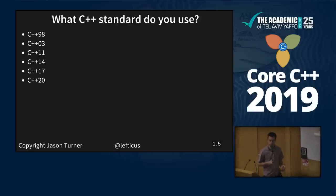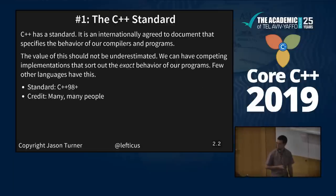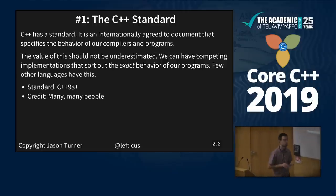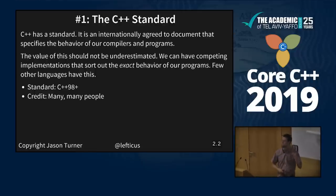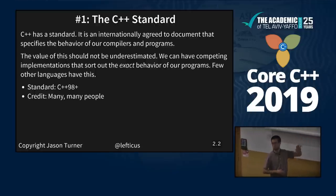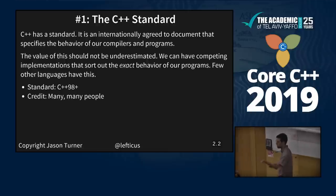The first thing we have is a standard — an internationally agreed-upon document that specifies the behavior of our compilers and our programs. The value of this really can't be underestimated. We have competing implementations that pin down the exact behavior of our programs. Few other languages have this. The first official C++ standard is C++98, and uncountably many people were involved.